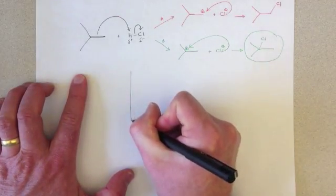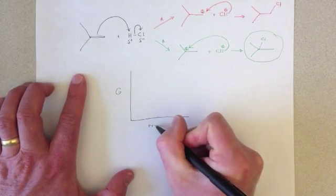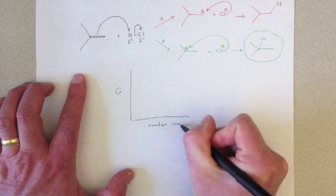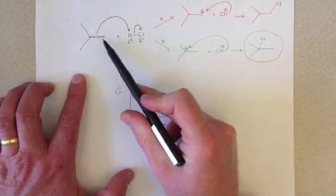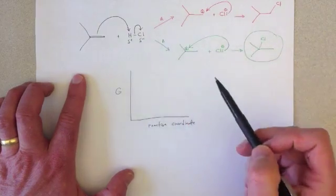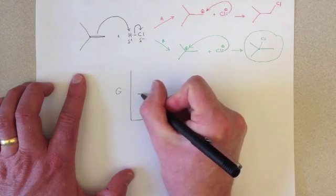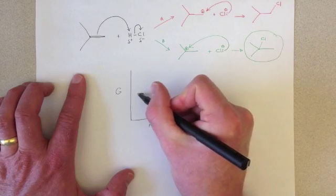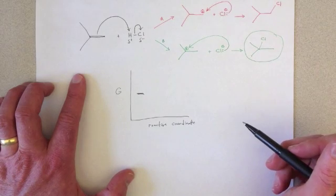So if we plot Gibbs free energy against a reaction coordinate describing the course of this reaction, we might imagine that the products of either A or B mechanisms are the same, and therefore would have the same energy. We can just put them here, halfway on the G scale of our reaction diagram.